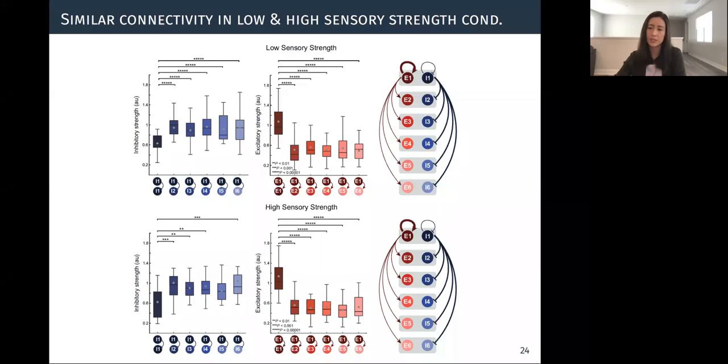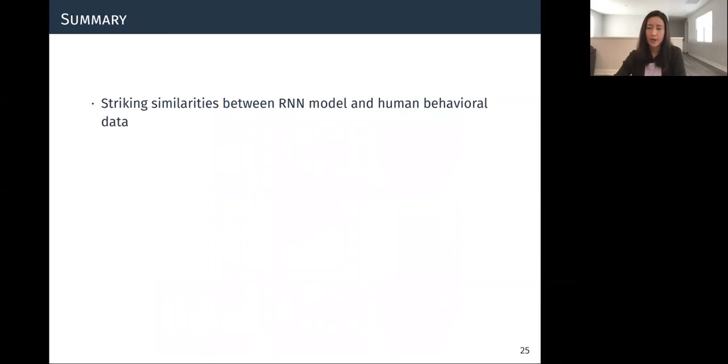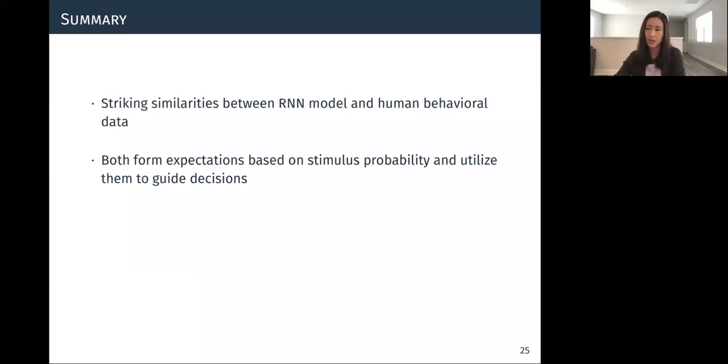So to summarize, we found that both humans and the recurrent neural network model successfully extract information about stimulus probability and integrate this knowledge into their decisions and task strategy in a new environment. Specifically, performance of both humans and the recurrent neural network model varied with the degree to which the stimulus probability of the new environment matched the formed expectation. So in both humans and the models, this expectation effect was more prominent when the strength of sensory evidence was low. And these findings suggest that both humans and recurrent neural network model placed more emphasis on prior expectation when the available sensory information was limited or noisy.